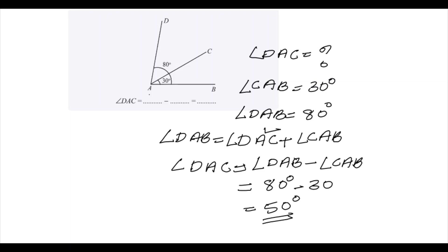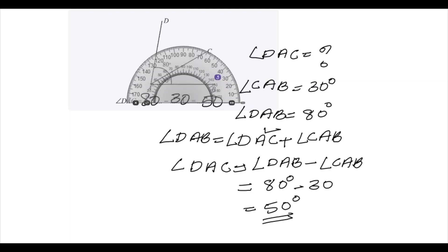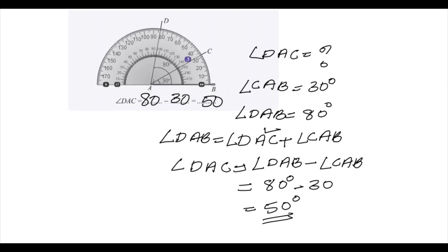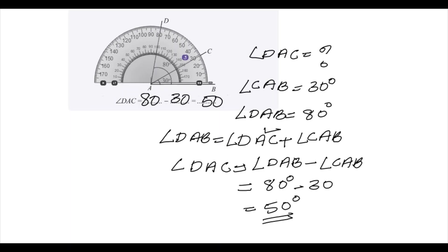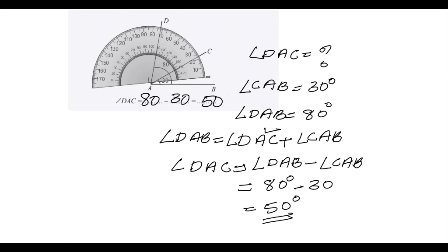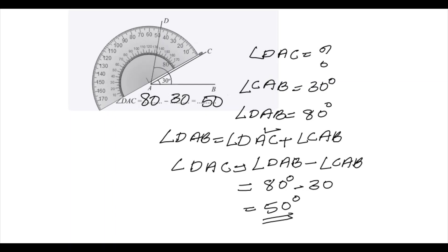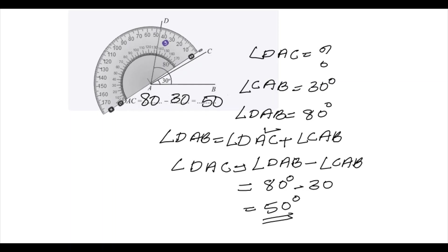So angle DAC is equal to the large angle, that is 80 degrees, minus the small angle, 30 degrees. So 80 minus 30 is equal to 50 degrees. If you have a protractor, you can check whether your answer is correct or not — just place the protractor there and measure the angle. We know angle DAB is equal to 80 degrees and the required angle DAC is equal to 50 degrees.